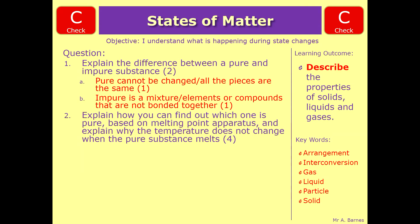Question two, which is explain how you can find out which one is pure based on melting point apparatus and explain why the temperature does not change when the pure substance melts. This is a bit of a link back to one of the previous videos. The first marking point is for saying heat both of them up until they melt. Usually in the exam just for saying heat them, melt them, you'd have got one mark.